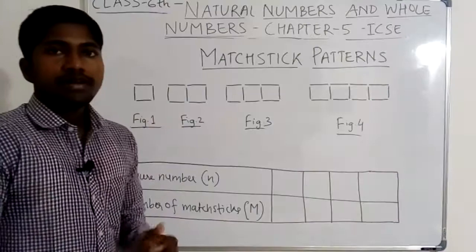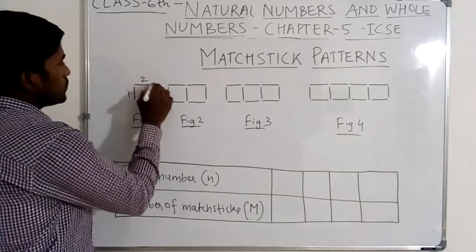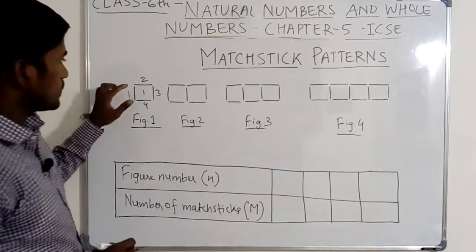See here. In figure 1, there is one square made of mastic. How many mastic are used here? One, two, three, four. Four numbers of mastic are used here. And the number of squares is one.